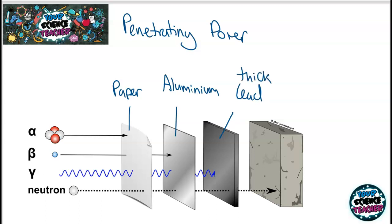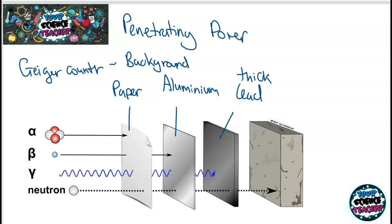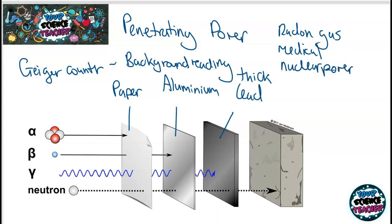To detect whether radiation is going through, you use a machine called a Geiger counter, which works by ionising particles when they hit the detector. The key thing to remember is that you must take a background reading of radiation first. The reason is that there is background radiation from various sources — it could be radon gas in the atmosphere, medical equipment, or nuclear power stations. You need to take a background reading so you know how much to subtract from the Geiger counter reading to determine whether your radioactive source has passed through the material.